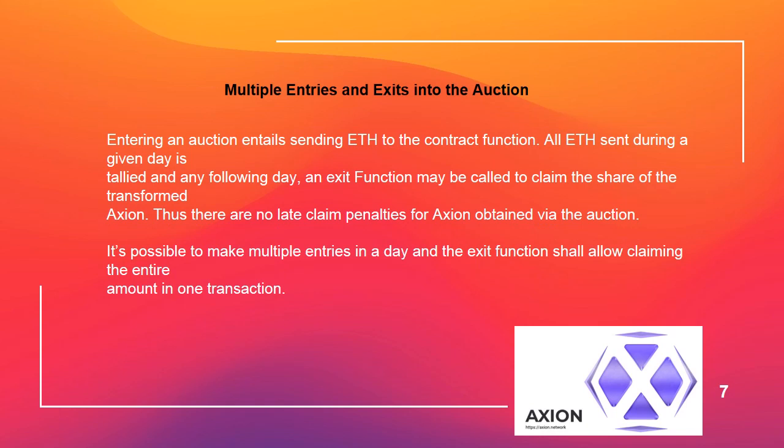Multiple entries and exits into the auction. Entering an auction entails sending ETH to the contract function. All ETH sent during a given day is tallied, and any following day, an exit function may be called to claim the share of the transformed Axion. Thus there are no late claim penalties for Axion obtained via the auction. It's possible to make multiple entries in a day, and the exit function shall allow claiming the entire amount in one transaction.